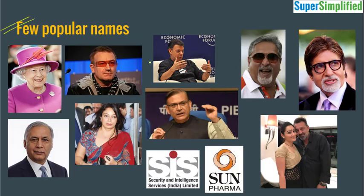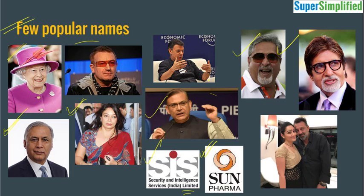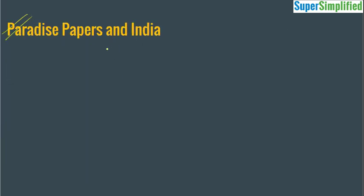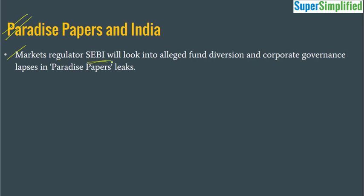Among those whose financial affairs are mentioned are Queen Elizabeth II, President of Colombia Juan Manuel Santos, and U.S. Secretary of Commerce Wilbur Ross. According to Boston Consulting Group (BCG), the amount of money involved is around $10 trillion. The Indian names include Bollywood star Amitabh Bachchan, defaulter businessman Vijay Mallya, corporate lobbyist Neera Radhia, Union Minister Jayant Sinha, and Rajya Sabha MP RK Sinha. Some firms are also listed, like Security and Intelligence Services (SIS) Limited owned by RK Sinha, and Sun Pharma. Now, after the leak has come out, market regulator SEBI has said it will look into the alleged fund diversion and corporate governance lapses in the Paradise Papers leaks.